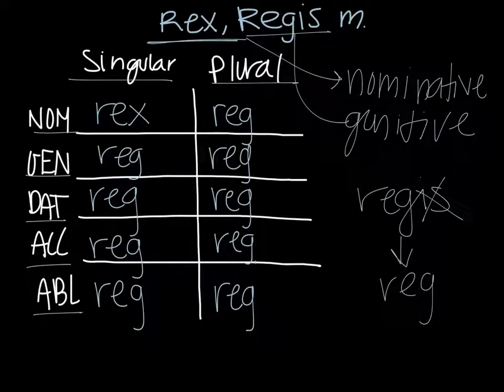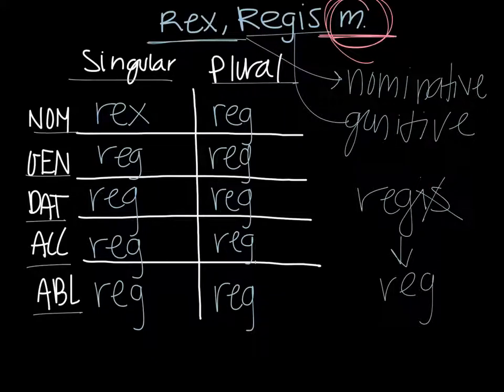Now that we have our genitive stem plugged into our categories we can put the endings on each of these stems. How we know what endings to use are determined by the gender of the word. In this case this is a masculine word so we're going to use the masculine/feminine chart to decline it. There are different charts for masculine/feminine and neuter so it's important to look at the gender before you plug the endings on to make sure you have the correct endings on your words.